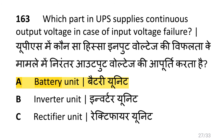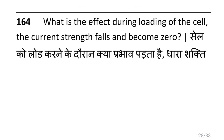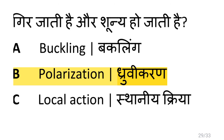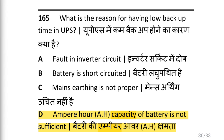Which part in UPS supplies continuous output voltage in case of input voltage failure? i.e. battery unit. What is the effect during loading of a cell? The current strength falls and becomes zero, i.e. polarization. What is the reason for having low backup time in UPS? i.e. ampere hour (AH) capacity of battery is not sufficient.